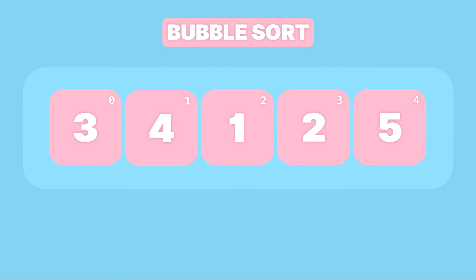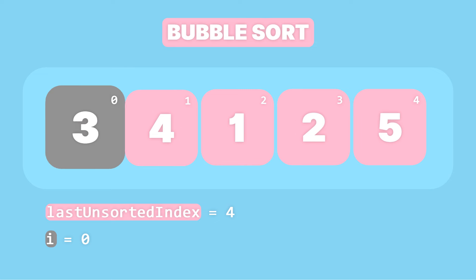When we initiate the algorithm for this array, we have a variable called last unsorted index, which represents the last index or the last element of the unsorted partition. When we start the algorithm, the entire array is unsorted, so the last unsorted index variable is initially set to 4. The implementation starts sorting from the left side of the array at index 0, and that's why we have another variable i, which is initially set to 0. We then compare the element at index 0 with the element at index 1, and if the element at index 0 is larger than the element at index 1 we swap their positions. But if it's smaller, we don't do anything, because we want to move larger elements towards the end of the array.